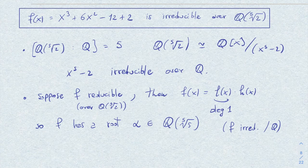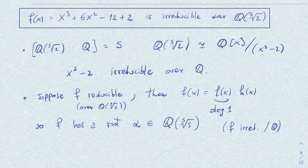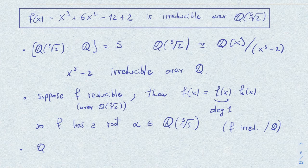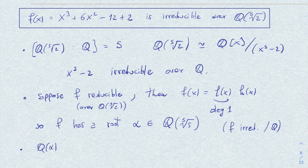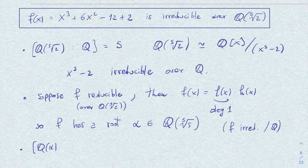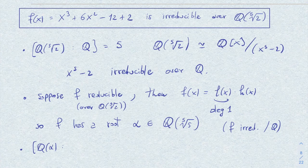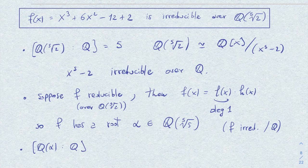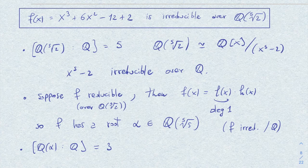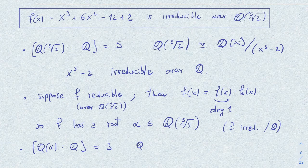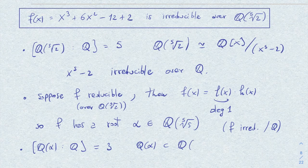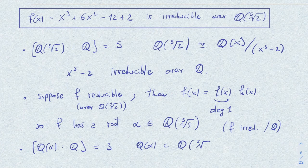So f is irreducible over Q, and therefore the extension Q(alpha), since we have polynomial f irreducible which has alpha as root over Q, has degree 3. But on the other hand, this is a subfield of Q(fifth root of 2).